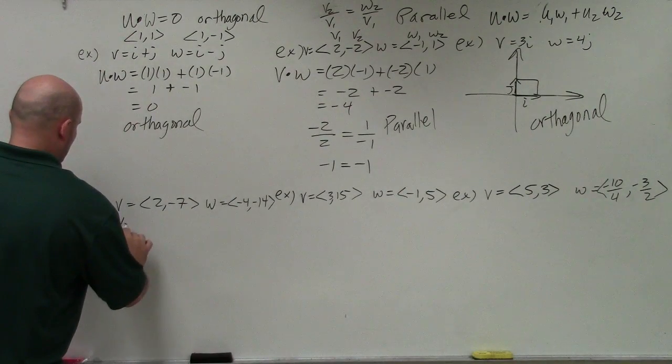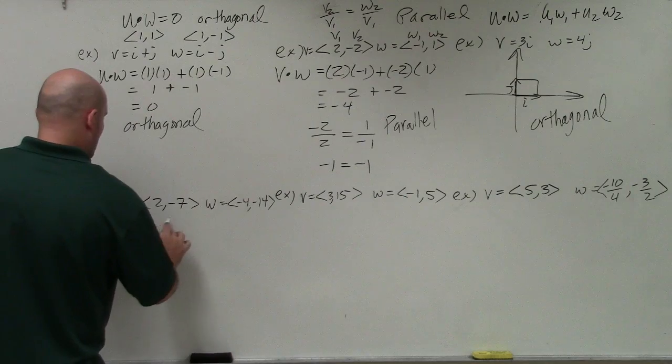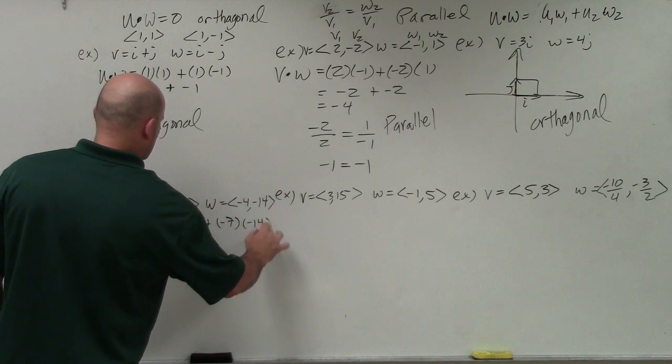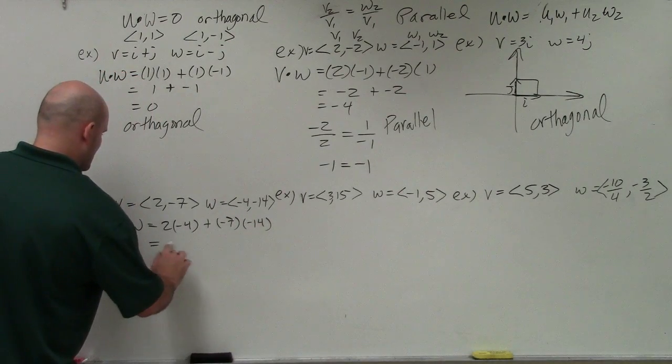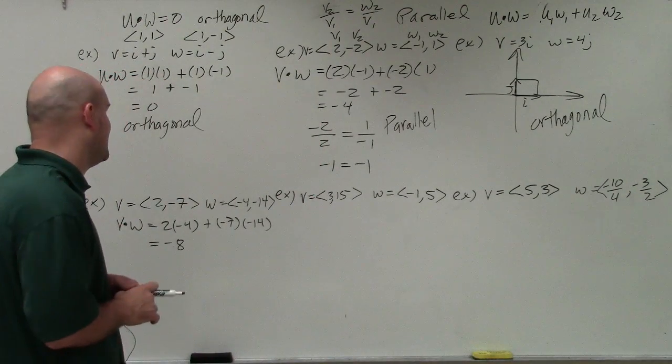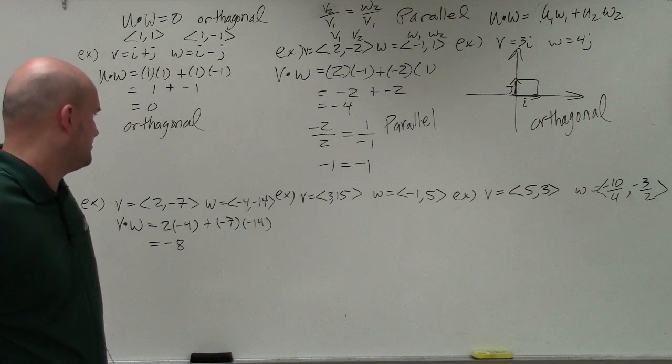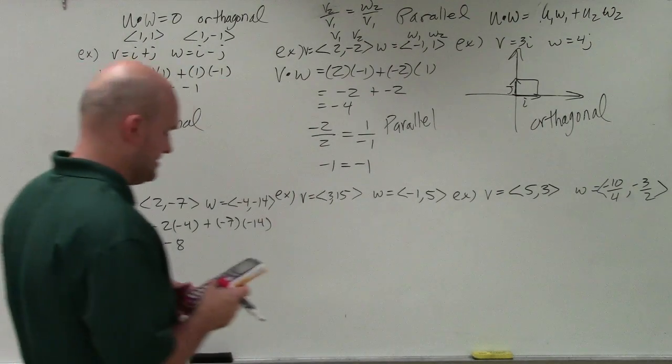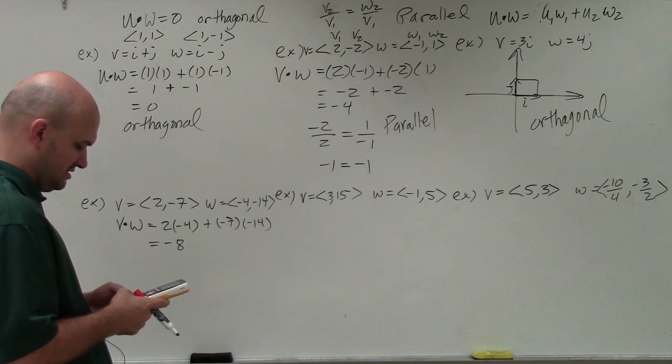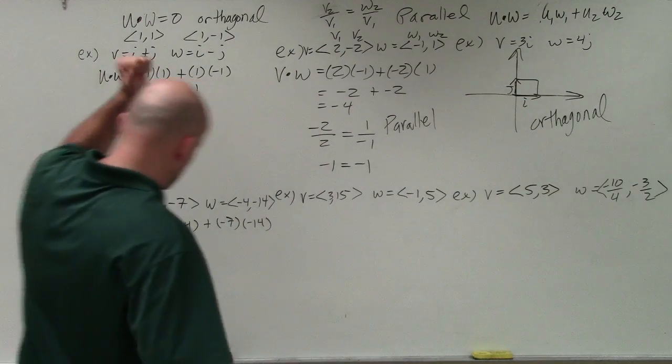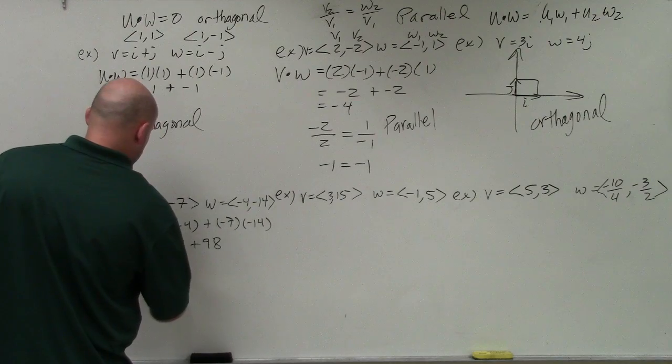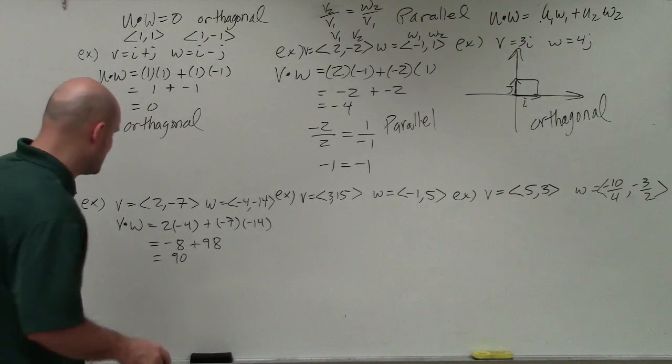The next one, let's do the dot product, v dot w. So what I get is 2 times negative 4 plus negative 7 times negative 14. I can pretty much agree that this is not going to add up to 0. But 7 times 14, that's going to be 70 plus 28, so that's going to be 98. And that's negative 7 times negative 14, so that's plus 98. So that equals 90, which is obviously not 0. So it's not orthogonal.